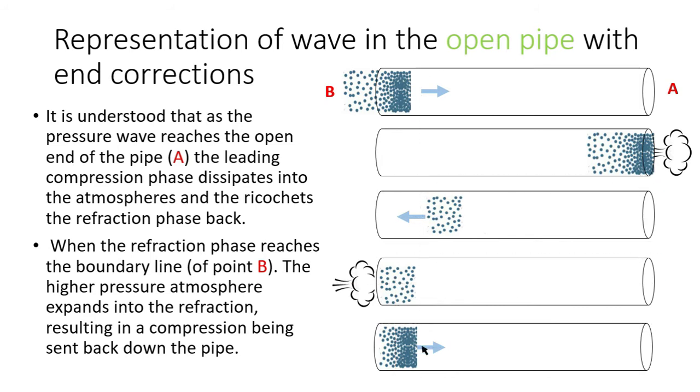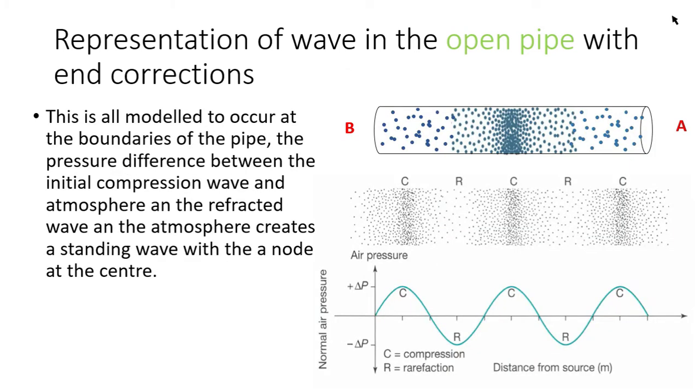And that continues on occurring in that open pipe. And what we expect to see is this destructive interference right in the center of the pipe and we should have that constructive interference in the open ends where our antinodes form.